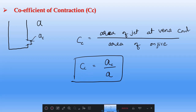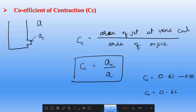The range of Cc is 0.61 to 0.69. If data is not given, you can consider Cc equal to 0.64.